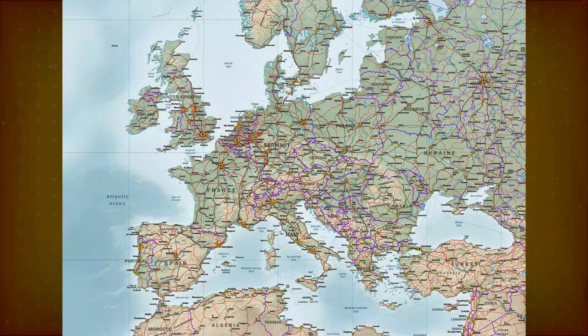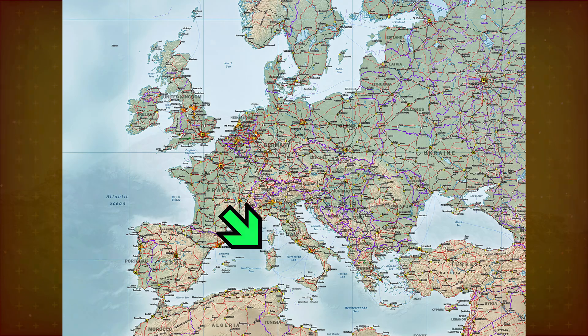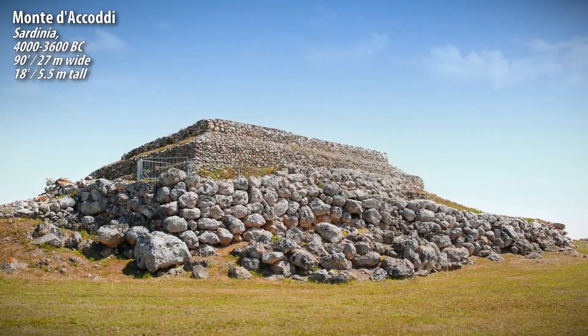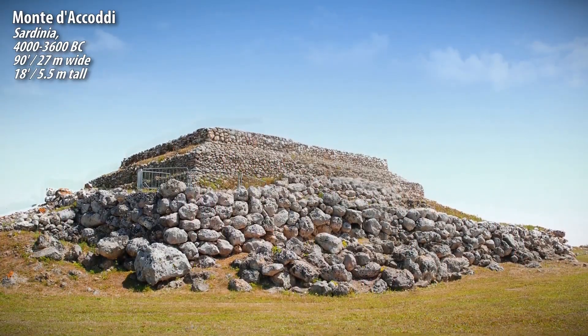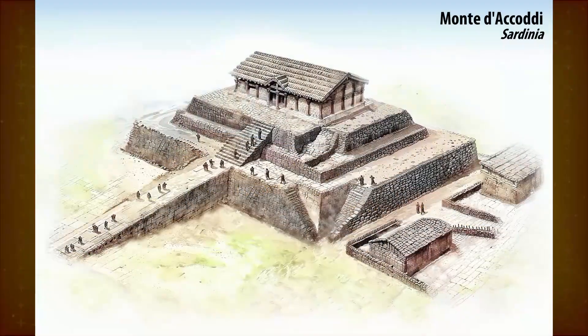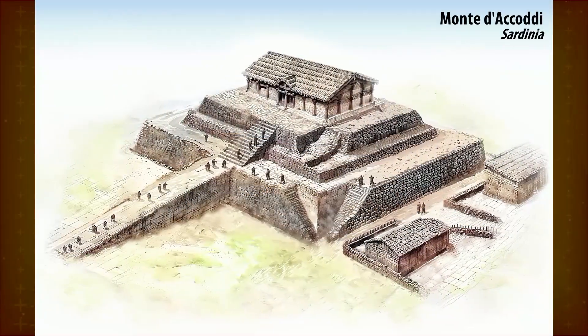Europe is not known for pyramids, but in northern Sardinia there's actually what looks like a stepped pyramid. It predates Egyptian pyramids by some 500 years and may have been the base of a temple.